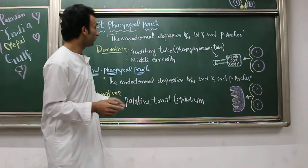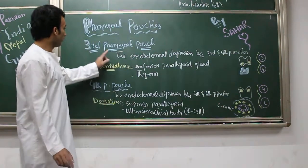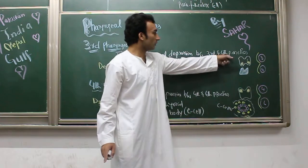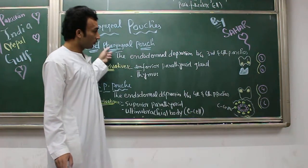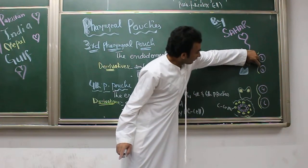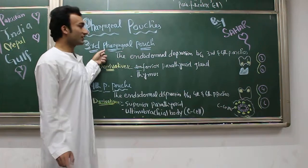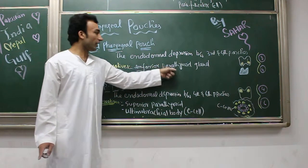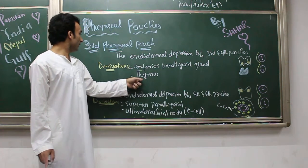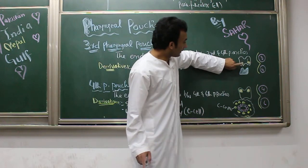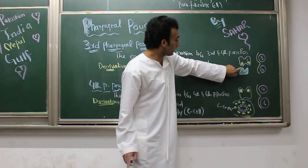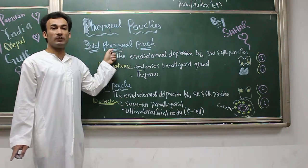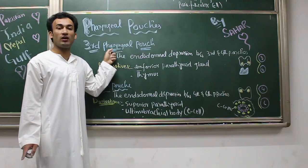Now the third pharyngeal pouch: the endodermal depression between the third and fourth pharyngeal arches is called the third pharyngeal pouch. The derivatives of the third pharyngeal pouch are the inferior parathyroid gland and the thymus. You can see in the diagram: this is the thymus and this is the inferior parathyroid gland. Failure in the development of the third pharyngeal pouch is called Nezelof's syndrome.